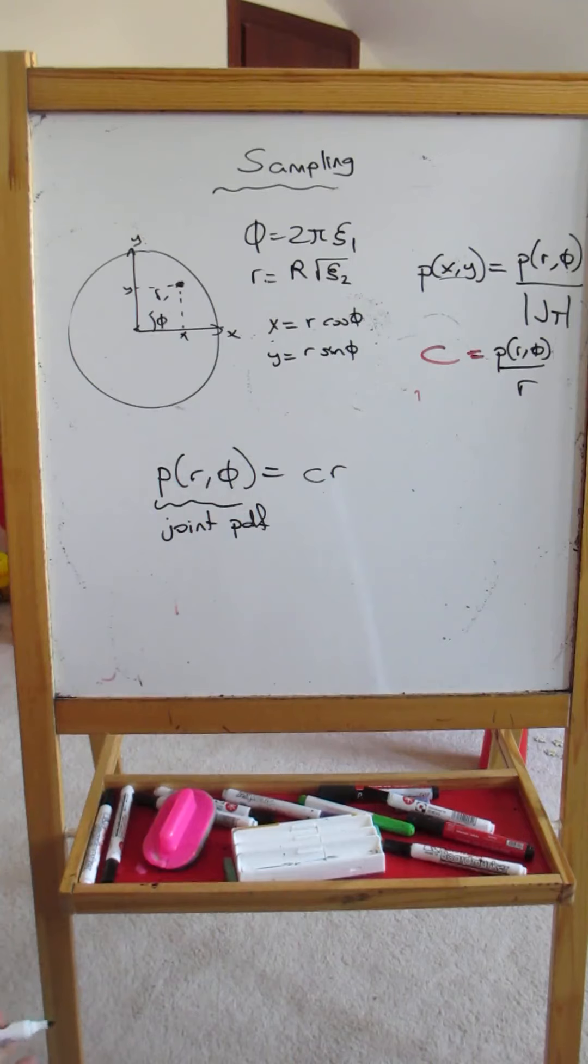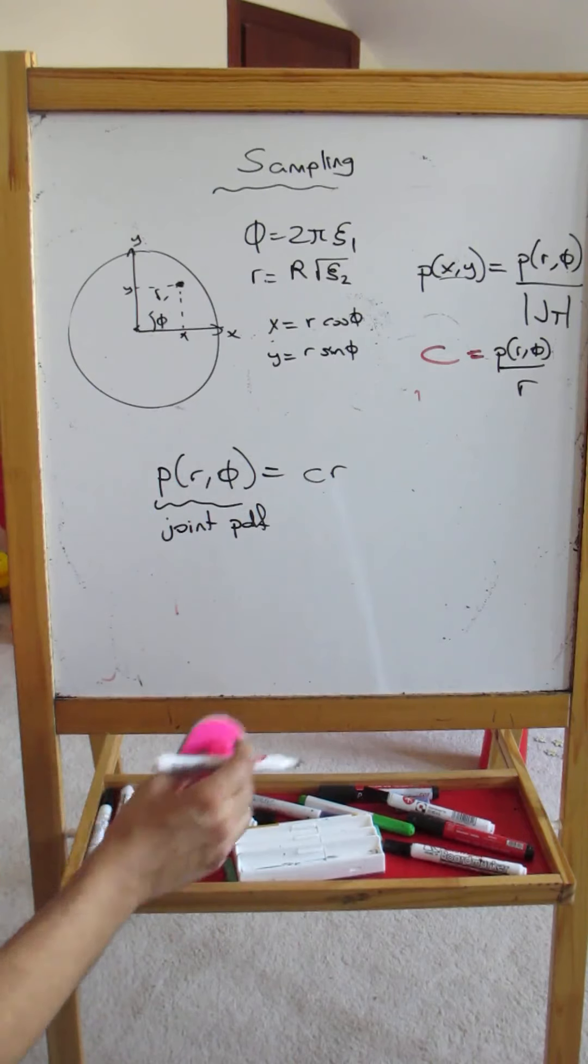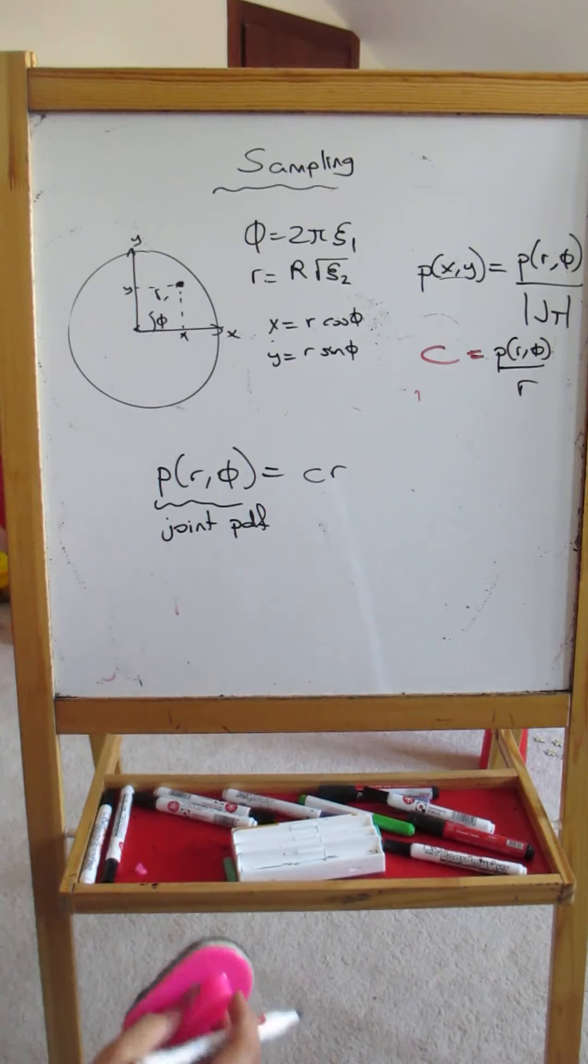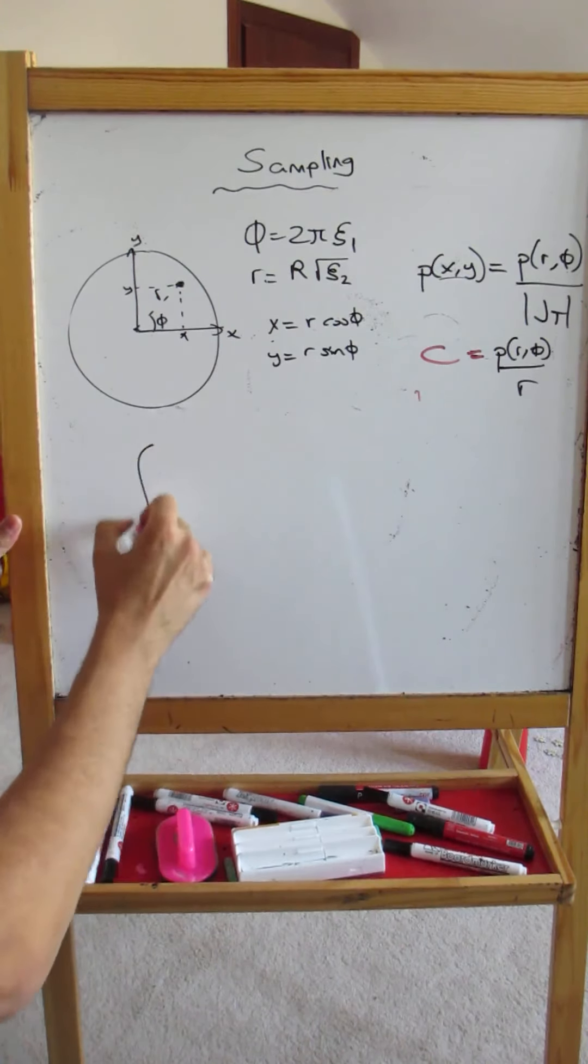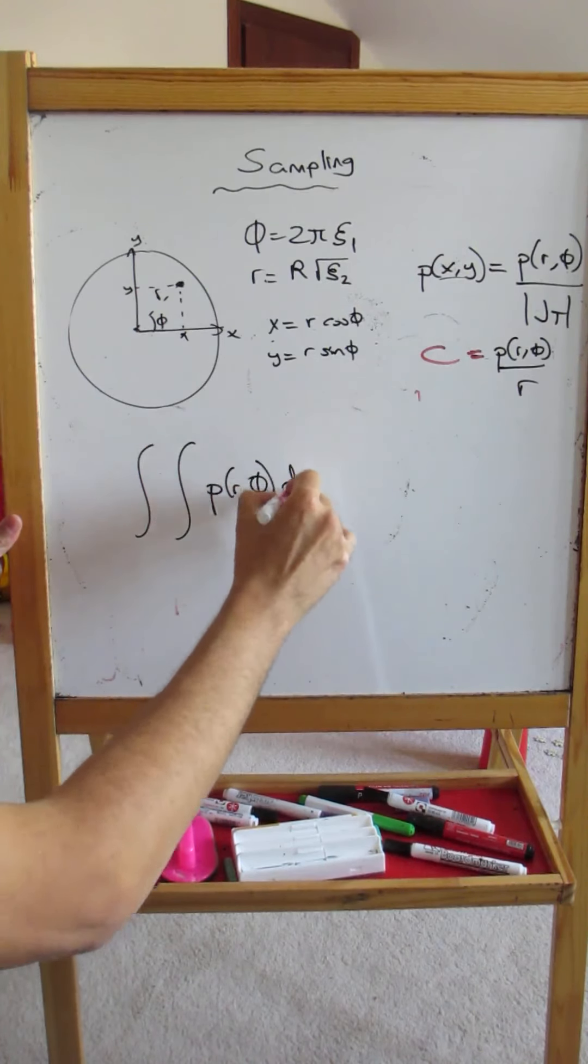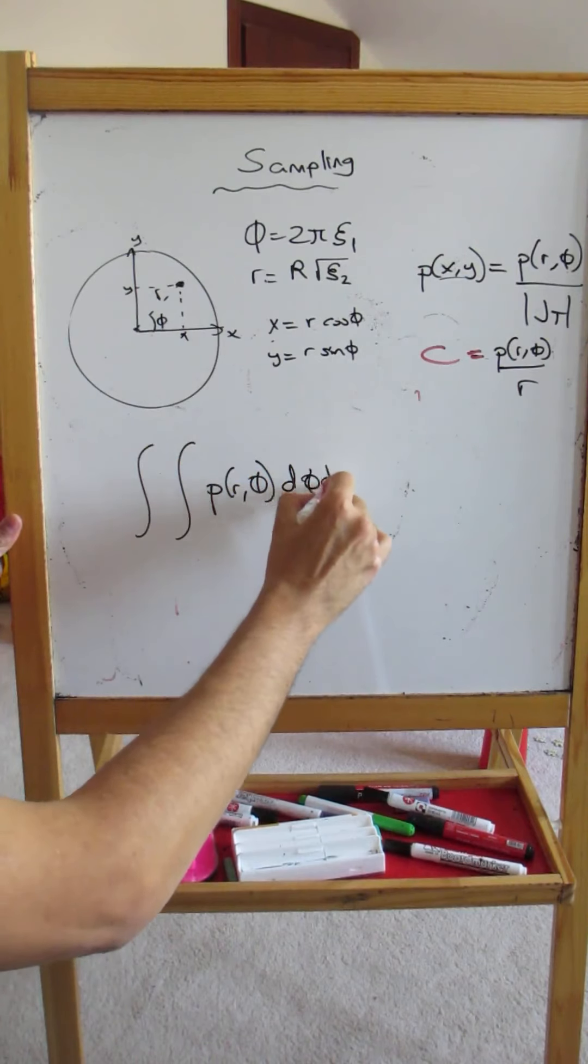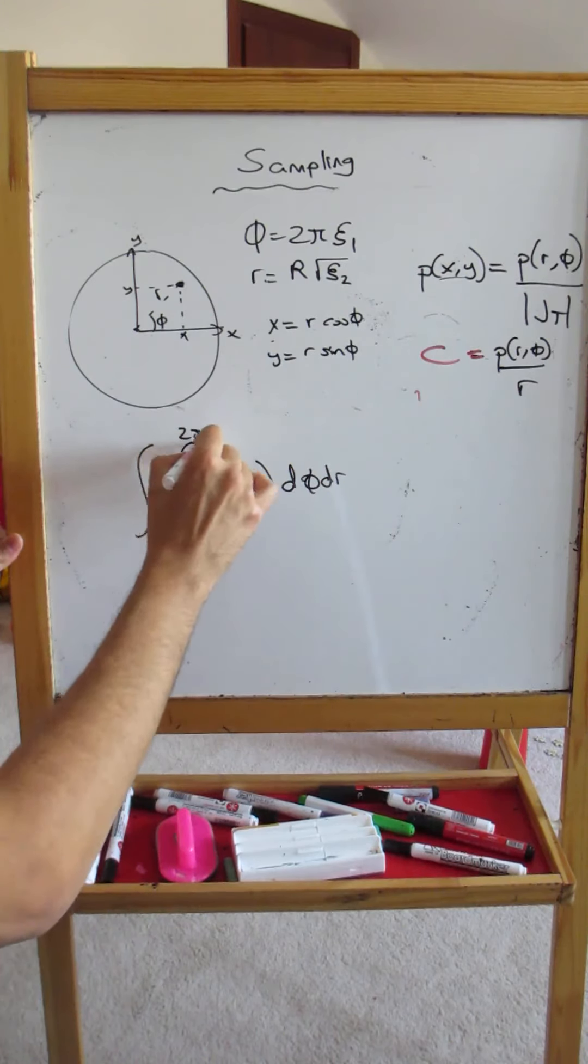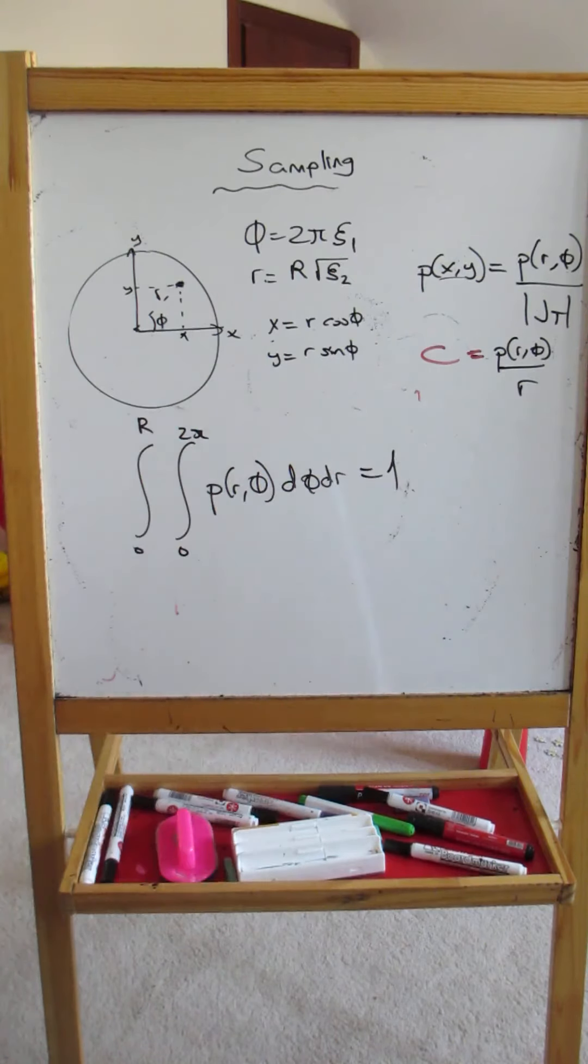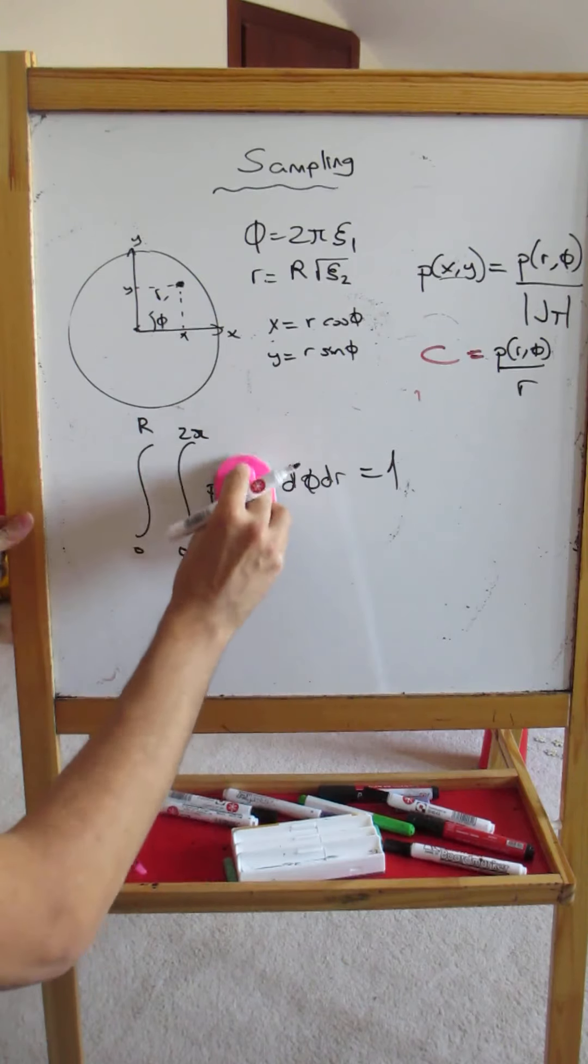Now, one property of PDFs which we know at this point is they must integrate to one. So if we take this p(r,phi) and d(phi) dr from zero to 2π and from zero to R, this should integrate to one. Now let's compute this.